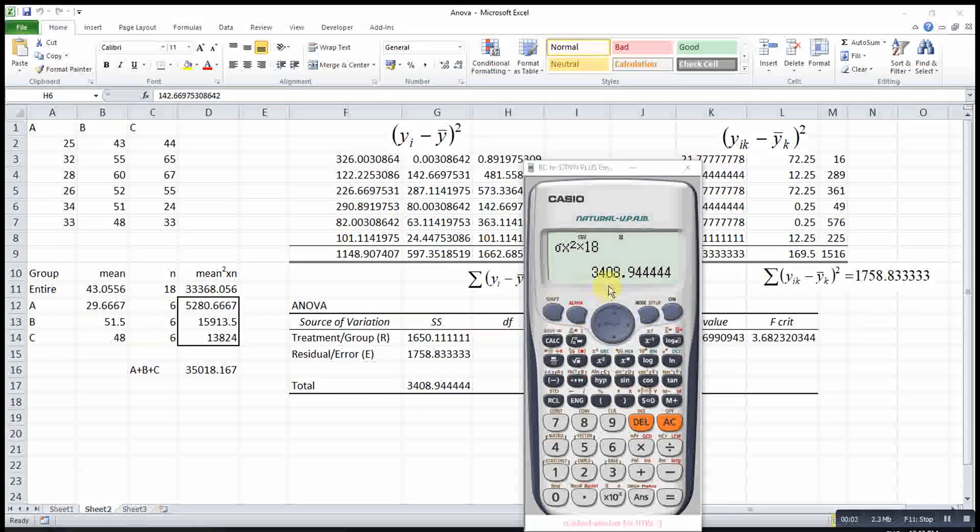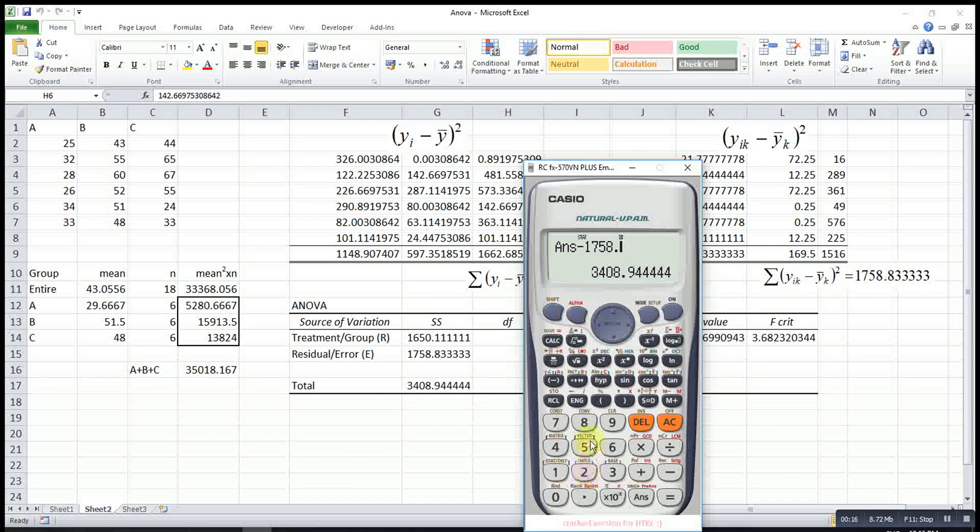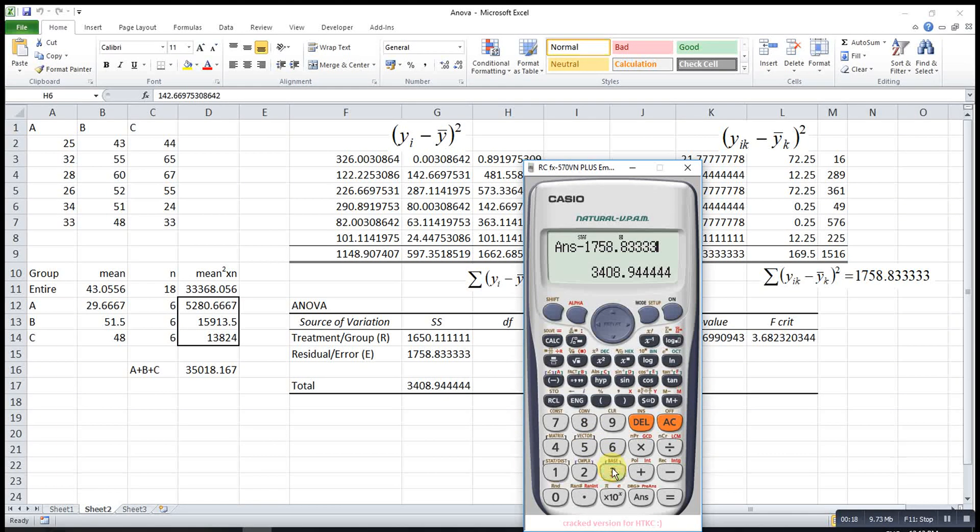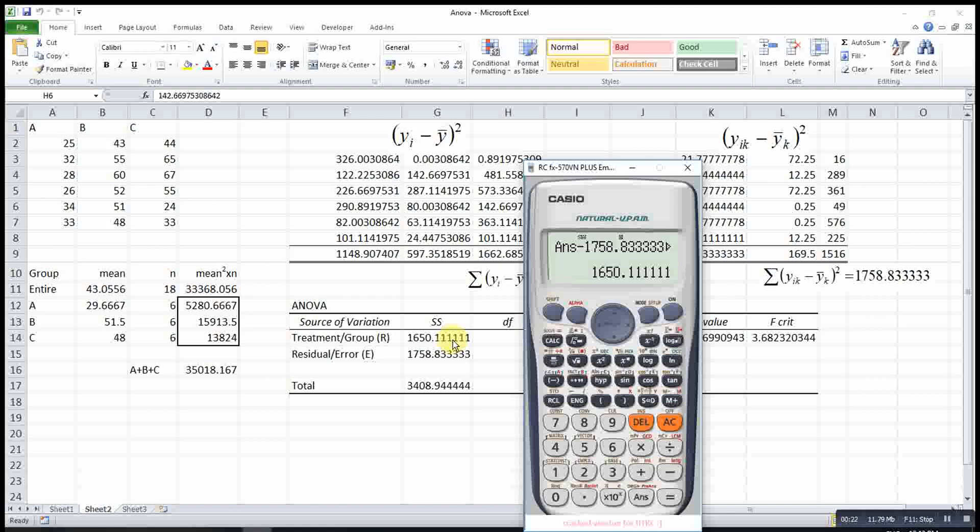After that, we take the difference between these two values to get the sum of square treatments. So we take this value minus 1758.0833333, then equals. This will be the sum of square treatments.